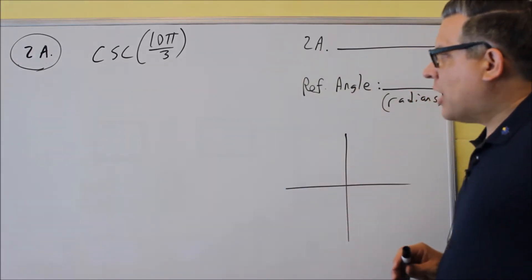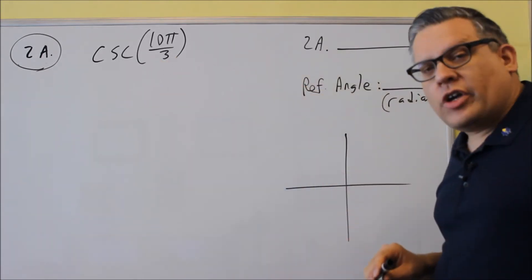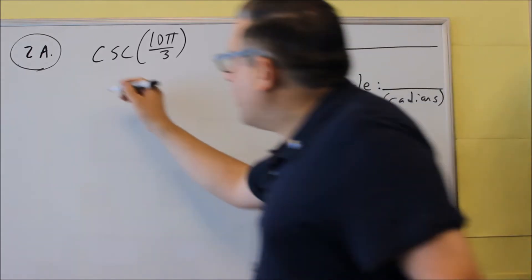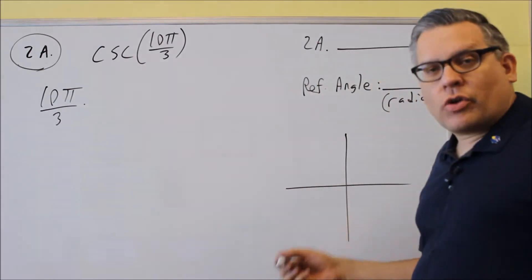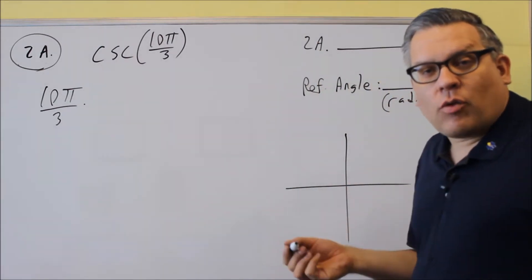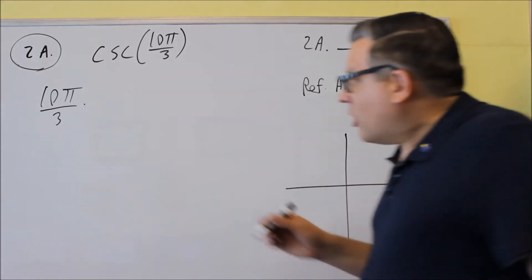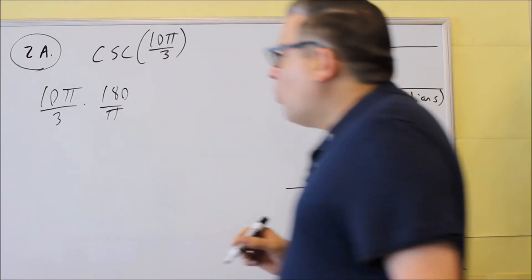So for this one, for 10 pi over 3, first, if you don't want to work in radians, you could change this into degrees. And so I'm going to go ahead and do that. So you should also know the formula for converting from radians to degrees or degrees to radians. You may need that one on there as well, so it's good to have that on your note card as well. We're going to multiply this by the conversion, which is going to be 180 over pi.